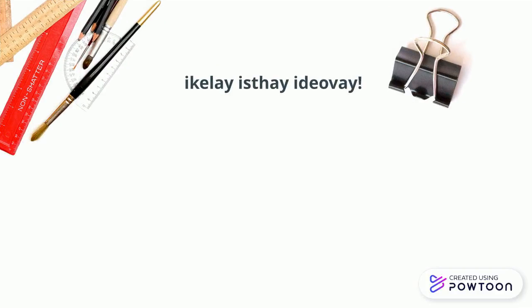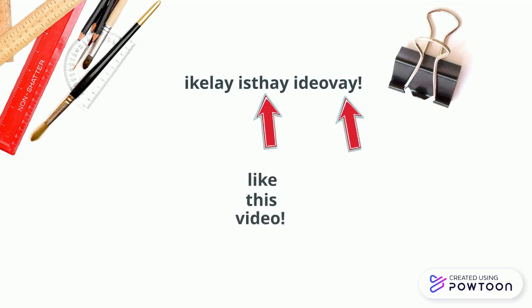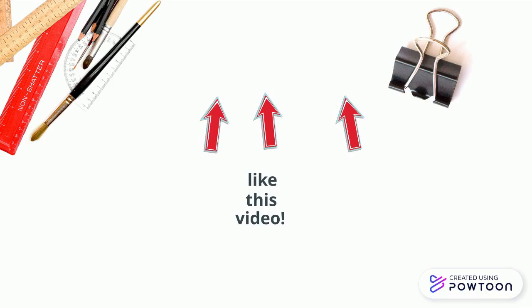Do you think you can try and decode this? If you're not sure, it says like this video. As you can see, we moved the letter to the back of the word, and we can see that we always add A-Y. When you're decoding, you can just pick out the A-Y or W-A-Y and move the last letter of the word to the beginning. Then it would be easier to decode it. Thank you for listening and subscribe.